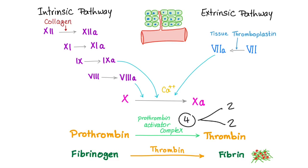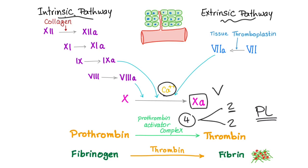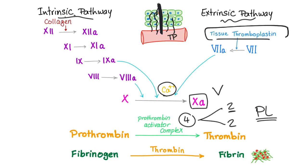The prothrombin activator complex consists of four things: two numbers — factor 10 and factor 5 — and two words — calcium and phospholipid. To coagulate, you can use the extrinsic pathway or intrinsic pathway, or both. For example, if there's a trauma — a knife into your skin — the blood vessel opens into the tissue, and tissue thromboplastin flows from tissue to blood. Tissue thromboplastin activates factor 7 into its active form. That's the extrinsic pathway — the fastest one, but less efficient.